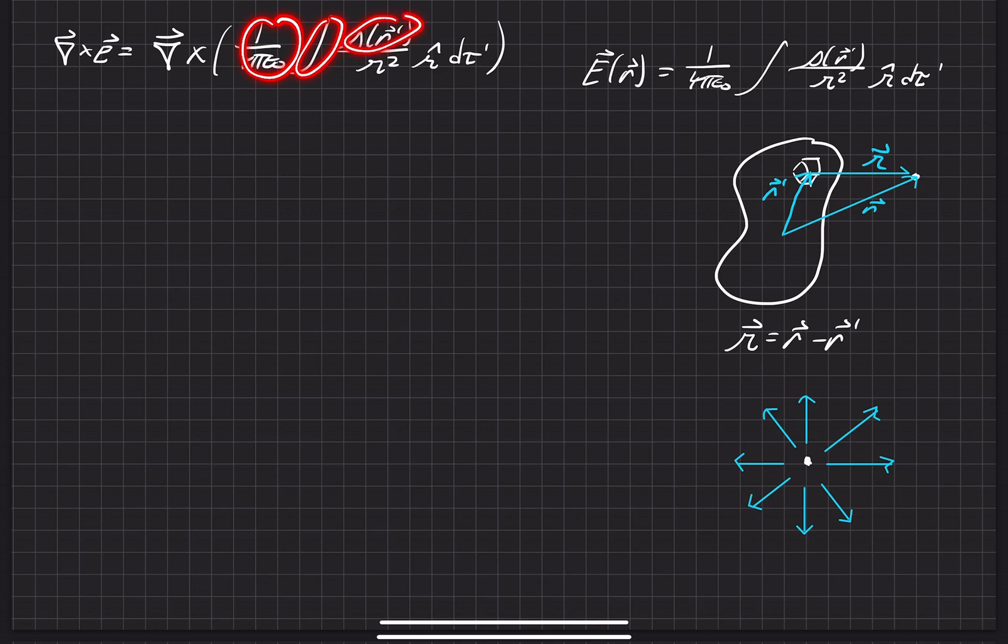So we'll go ahead and just make that apparent now. Move the constants out in front. Now we'll just go ahead and leave this as ρ.